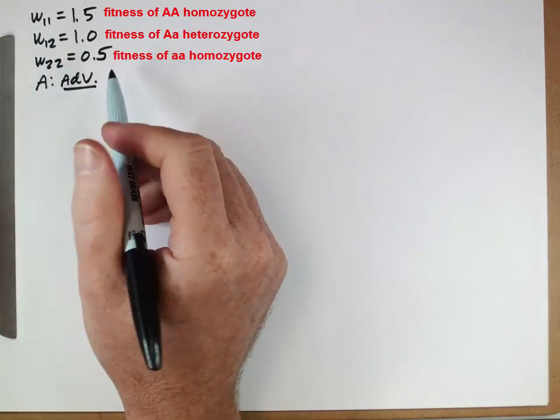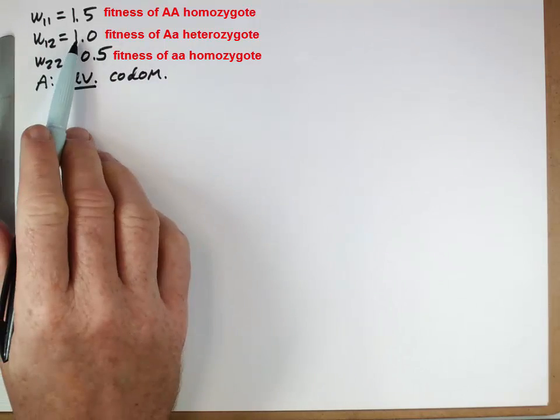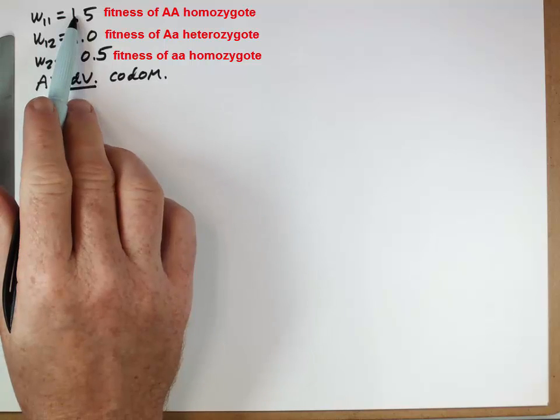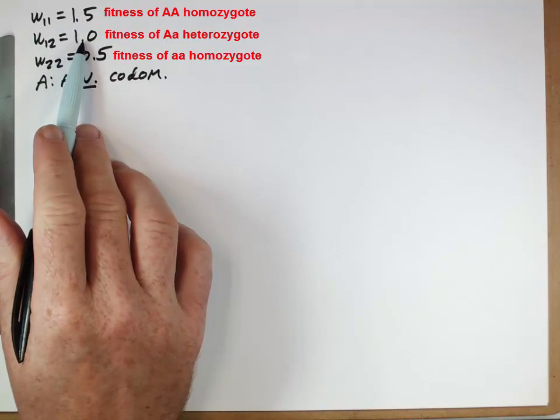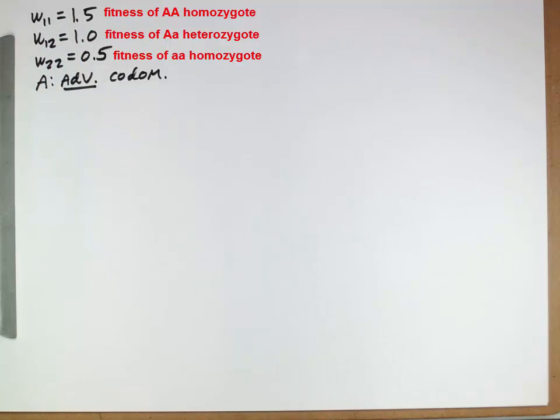And it's also codominant because having one copy is not as good as having two copies. The heterozygote is intermediate between this homozygote and this homozygote. So those alleles are codominant.